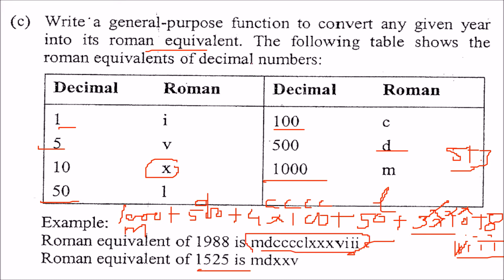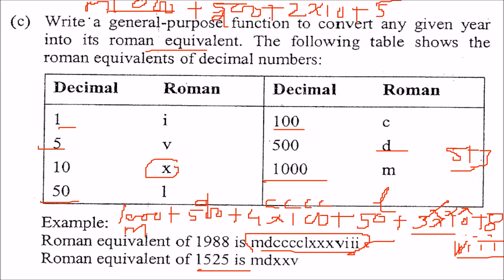Taking 1525 as another example: 1525 equals 1000 + 500 + 2×10 + 5. So 1000 is M, 500 is D, 2×10 gives XX, and 5 is V. So 1525 is MDXXV.